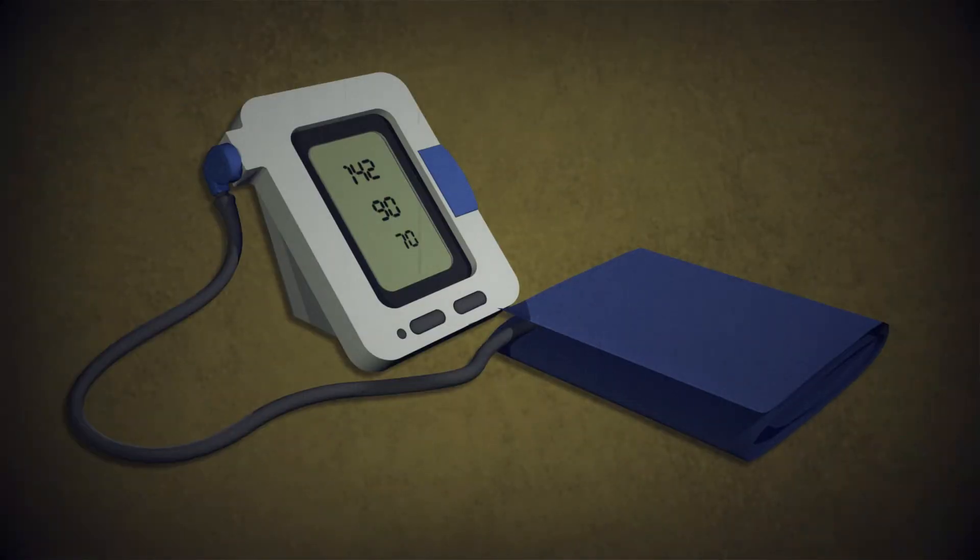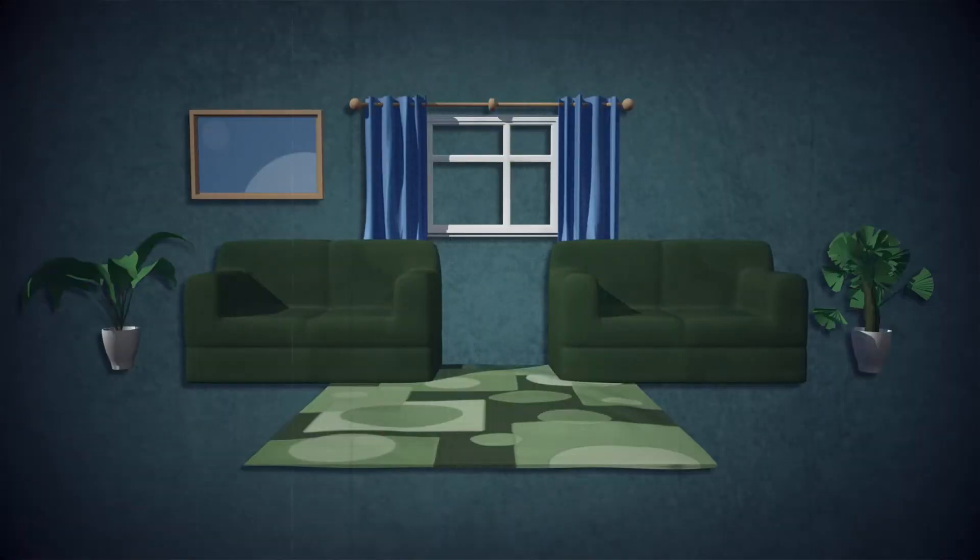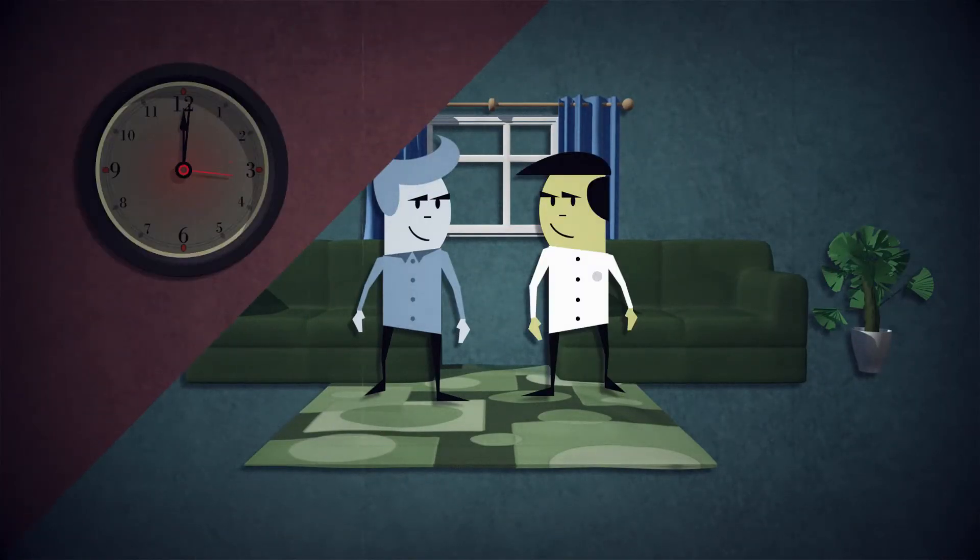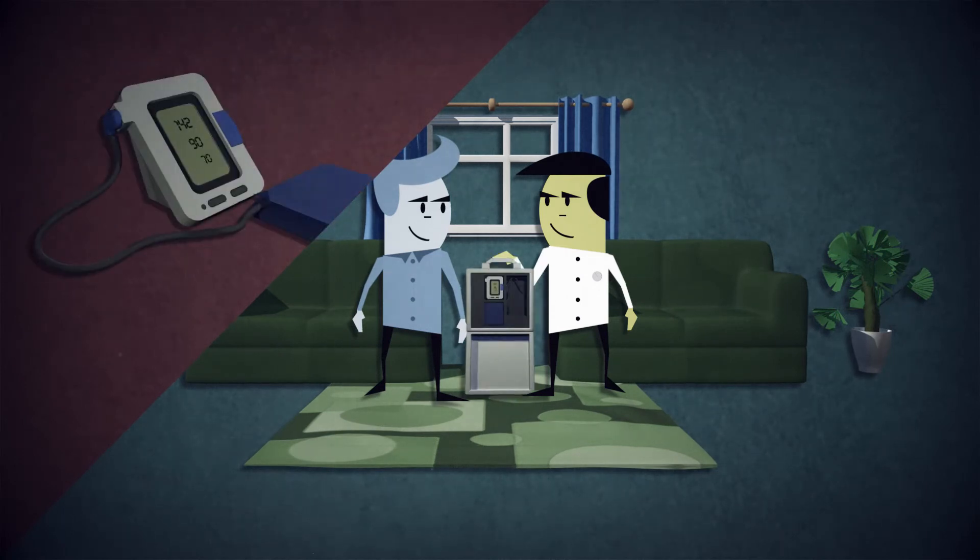If clinic blood pressure is above 140 over 90 mm of mercury, offer blood pressure monitoring to confirm the diagnosis of hypertension, either by ambulatory monitoring, where pressure is measured twice every hour throughout a normal day, or by home BP monitoring, where pressure is measured every morning and evening over several days.